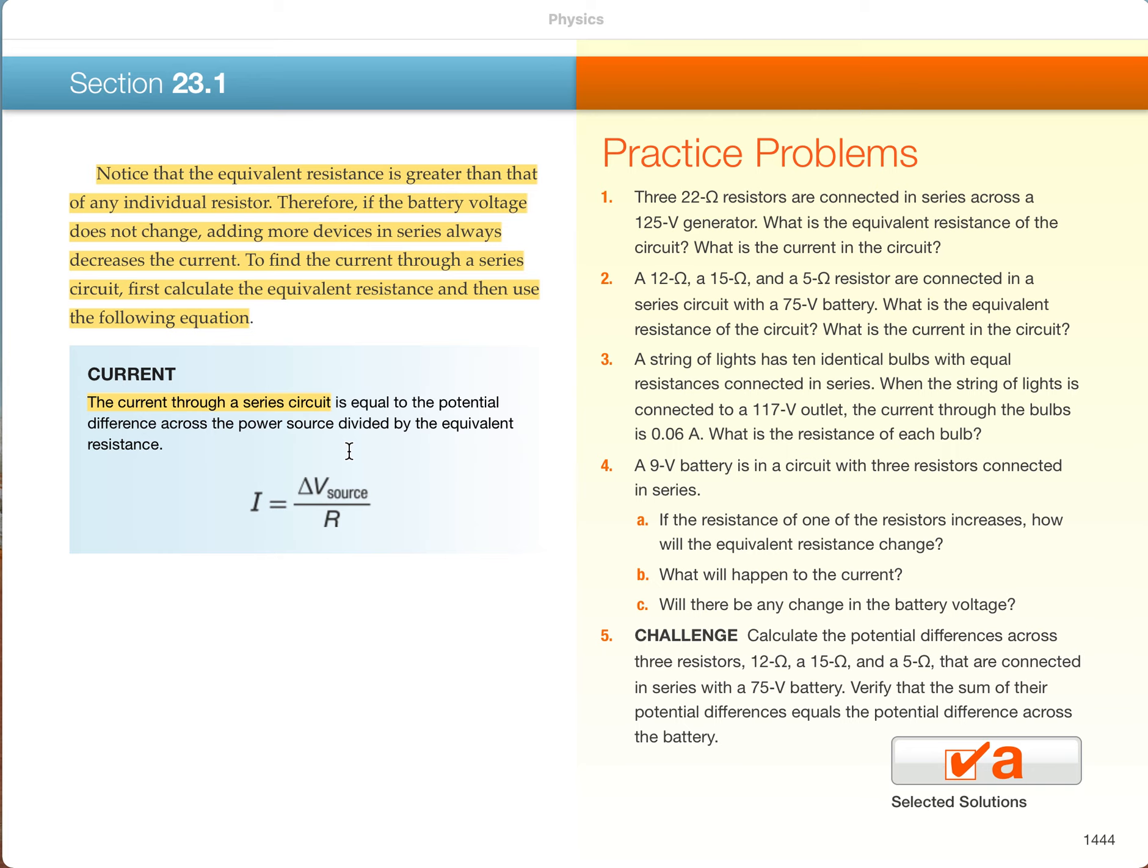Just a reminder, why do we bother finding that equivalent resistance, this capital R here? And the reason is, once we know the equivalent resistance of the circuit and the voltage on the battery, the source, we can use Ohm's Law to calculate the one current that flows through the entire circuit.